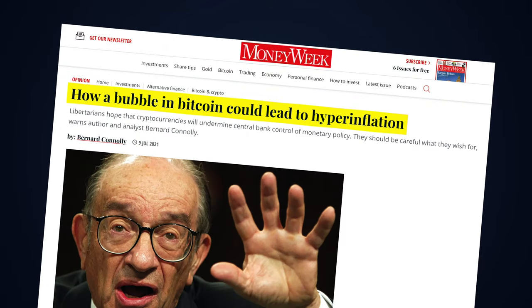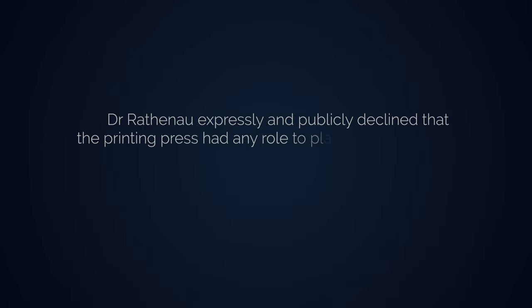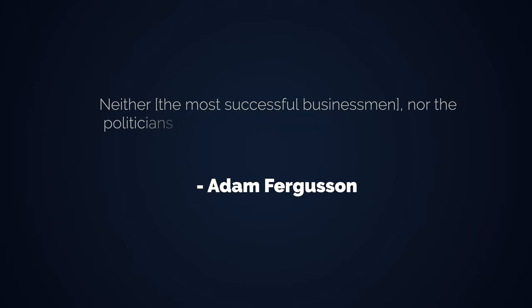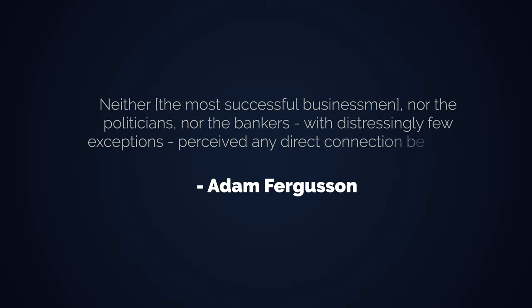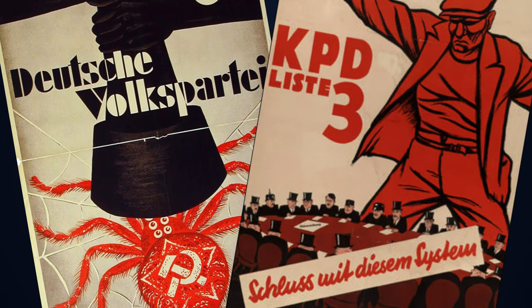The Weimar government refused to see monetary expansion as the key factor in inflation, but blamed external factors like currency speculators. Dr. Rathenau expressly and publicly declined that the printing press had any role to play in that permanently spiraling sequence of events. Neither the most successful businessmen, nor politicians, nor bankers — with distressingly few exceptions — perceived any direct connection between inflation and depreciation. Same story a century later.